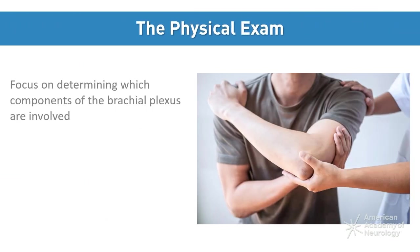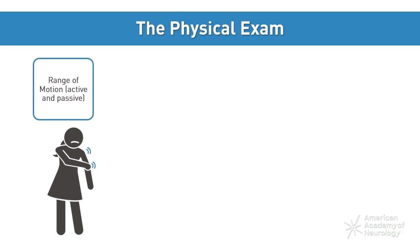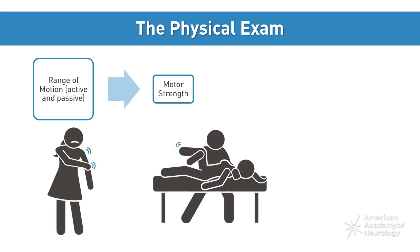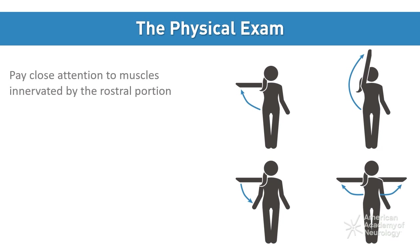Physical exams should focus on determining which components of the brachial plexus are involved while also considering non-neurological causes such as muscle or ligament dysfunctions. In addition to palpation and testing passive and active range of motion, a full motor examination with keen emphasis on those innervated by C5 to T1 nerve roots should be performed, along with sensory exam and reflexes. In brachial plexopathy evaluations, it is important to pay close attention to muscles innervated by the rostral portion of the brachial plexus, since these are commonly affected.